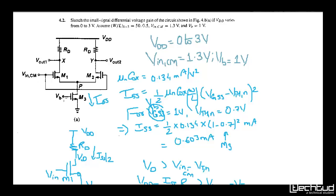If Vb is 1V then Vgs of M3 is 1V. But if Vin_common_mode is also 1V, the Vgs of M1 and M2 would not equal 1V. Also remember that the tail current source is Iss — when all transistors are in saturation, each branch carries Iss/2. Since W/b is the same, the required Vgs−Vt will be different and almost double. Keep this in mind.